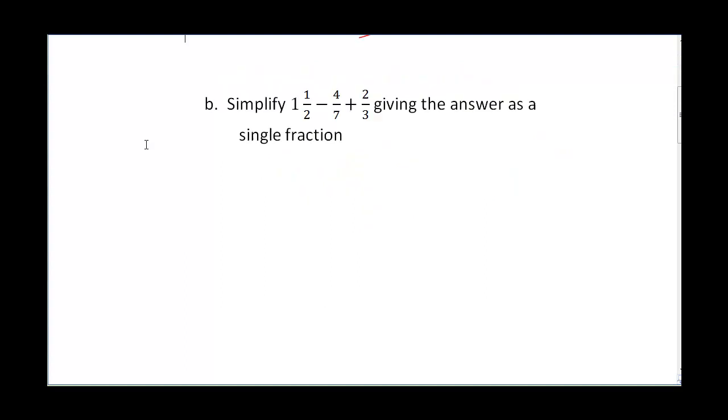Question b says simplify 1½ minus 4/7 plus 2/3, giving the answer as a single fraction. You can write this as 1½ minus 4/7 plus 2/3. One and a half is the same as 3/2 minus 4/7 plus 2/3.